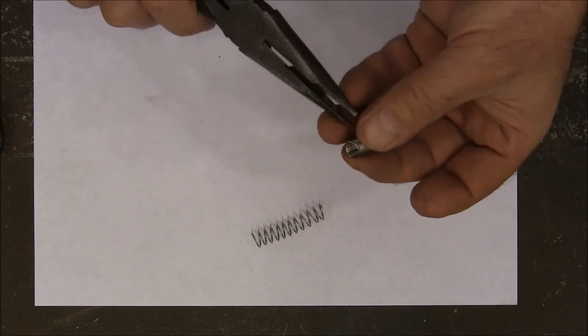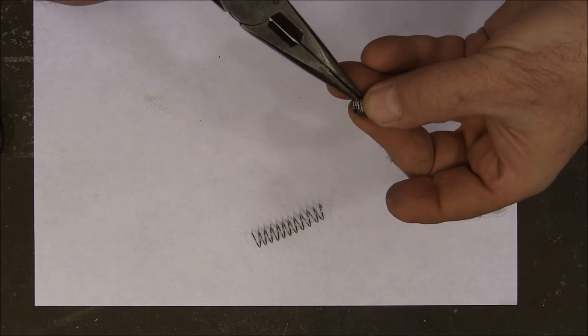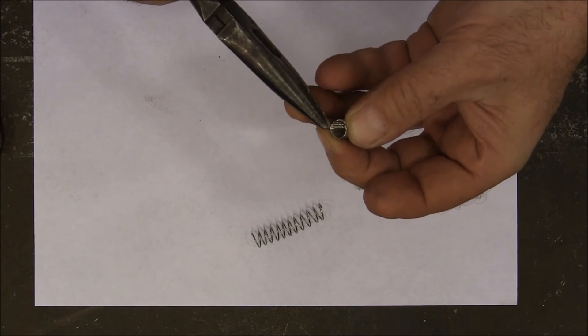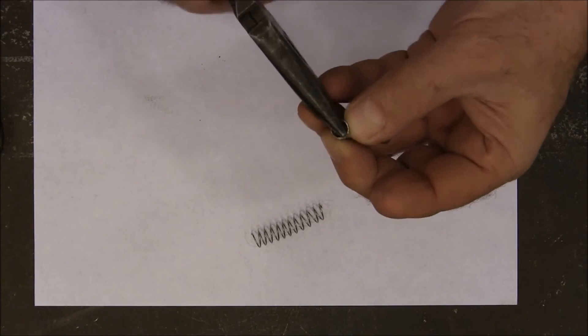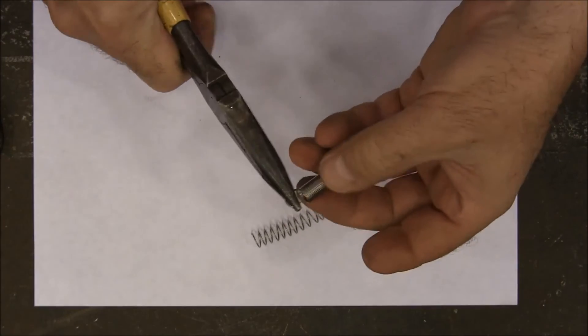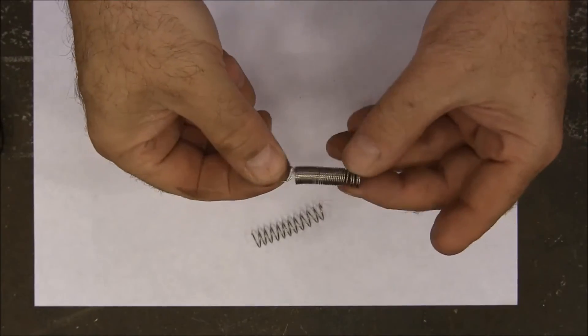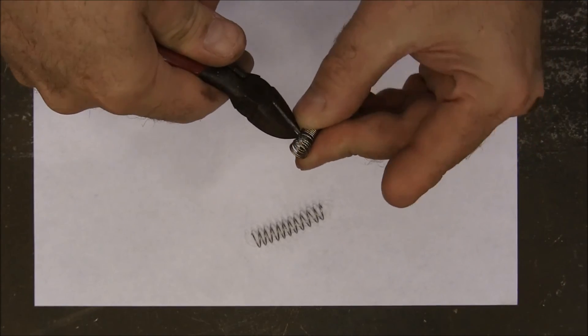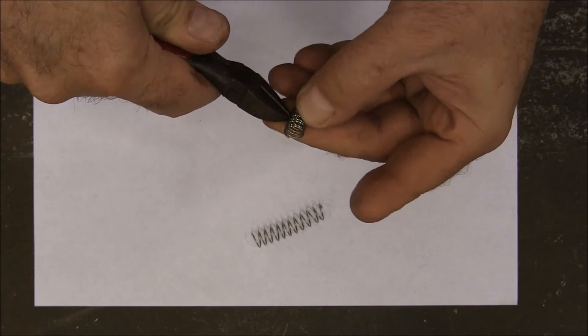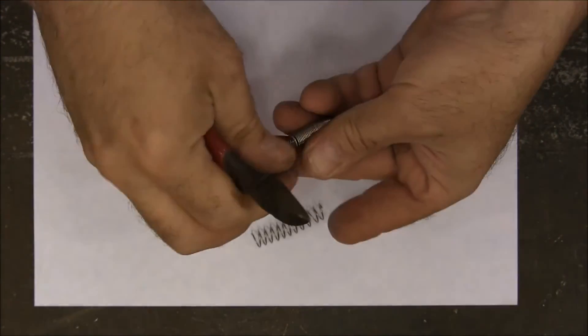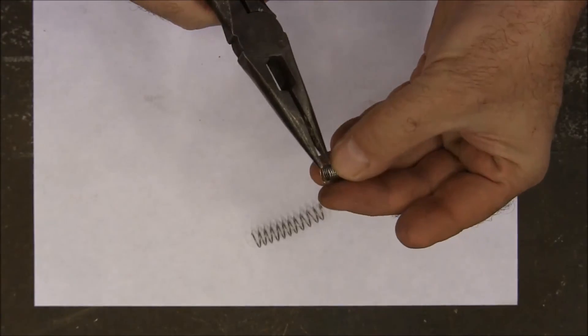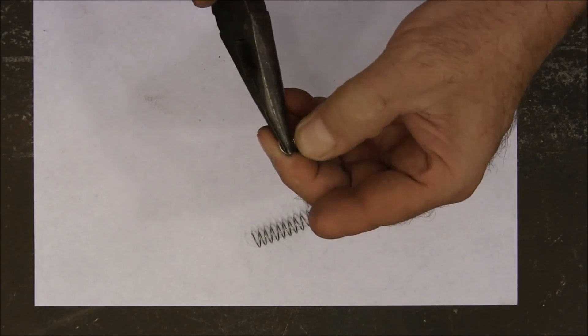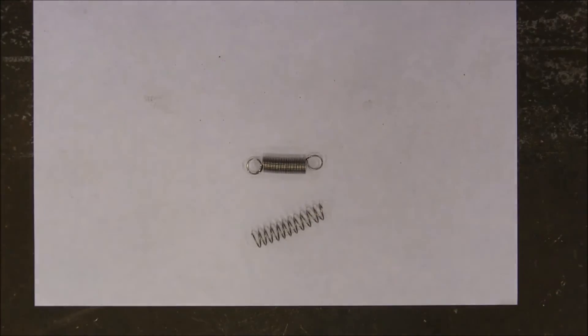And then you can take your ends and just bend them. Take some smaller pliers, just bend them like that and put an end on your spring. Just like that.